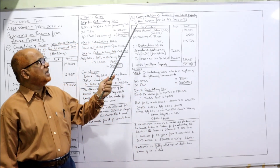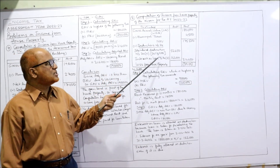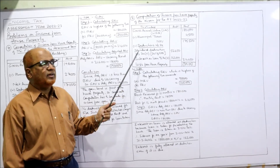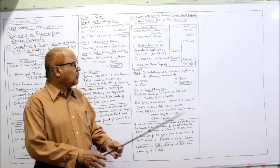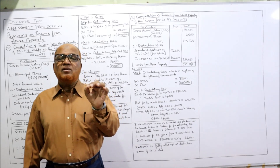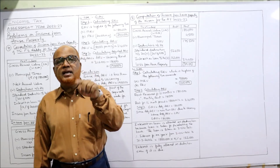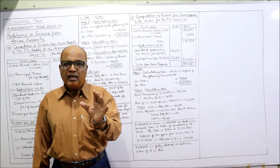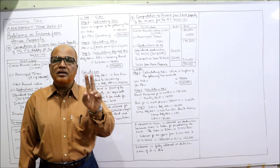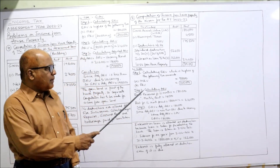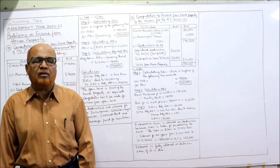Computation of income from house property of Mr. Kiran: Gross Annual Value, less municipal taxes, gives NAV; less deductions under Section 24A (30% of NAV) and Section 24B (interest on loan). Whenever there is a vacancy period, you must calculate the adjusted ARV. Step one: ERV is the higher of MRV and FRV. MRV is 98,000; FRV is 1,05,000. Whichever is higher is the ERV — so ERV is 1,05,000.